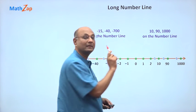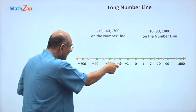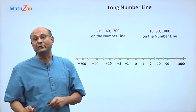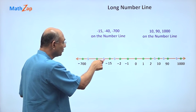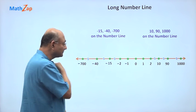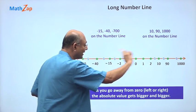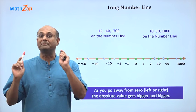When I go that way, the absolute value increases. When I go this way from 0, the numbers decrease, but the absolute value again increases. 1, 2, 15, 40, 700, the absolute value increases. As you go away from 0, left or right, the absolute value gets bigger and bigger.